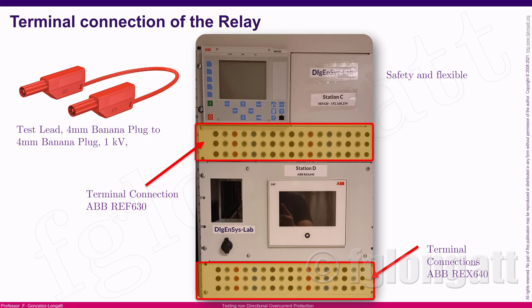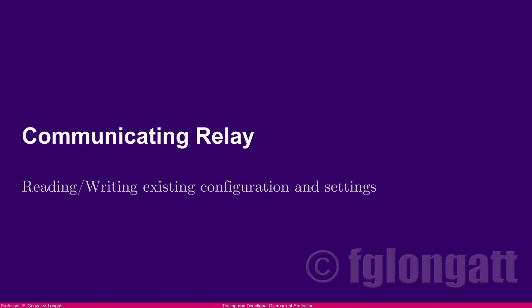When we arrive at the substation and are interested in testing relays, the first step involves ensuring the relay is disconnected from the CT and VT and addressing many safety aspects — though I won't discuss those here. The first step I will cover is establishing communication between the relay, the workstation, and the application used to read and write configurations and settings for the relay.